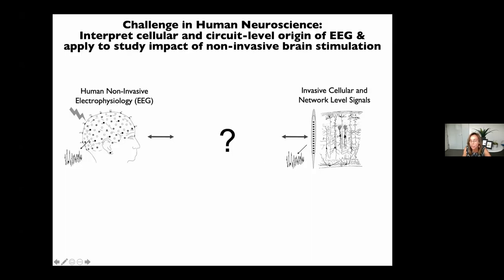I'd like to begin by giving you an overview of the challenge in human neuroscience that we aim to address by developing this tool. EEG is a powerful technology to study human brain dynamics because we can record from awake behaving humans with millisecond resolution, and we can have a direct readout of the impact of non-invasive brain stimulation on neural circuits. But a downside is that what we're recording is the macro-scale activity generated by large ensembles of neurons, and it's still difficult to infer what's going on at the underlying cellular and circuit level.